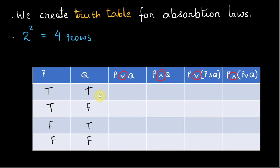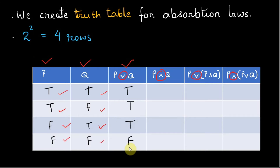Let's evaluate the P or Q column. We look at the P and Q columns: P is true and Q is true, so true. P is true and Q is false, so true again. P is false but Q is true, so true. Finally, both P and Q are false, so false. Similarly, evaluate the P and Q column — enter false if either P or Q is false: T, F, F, F.